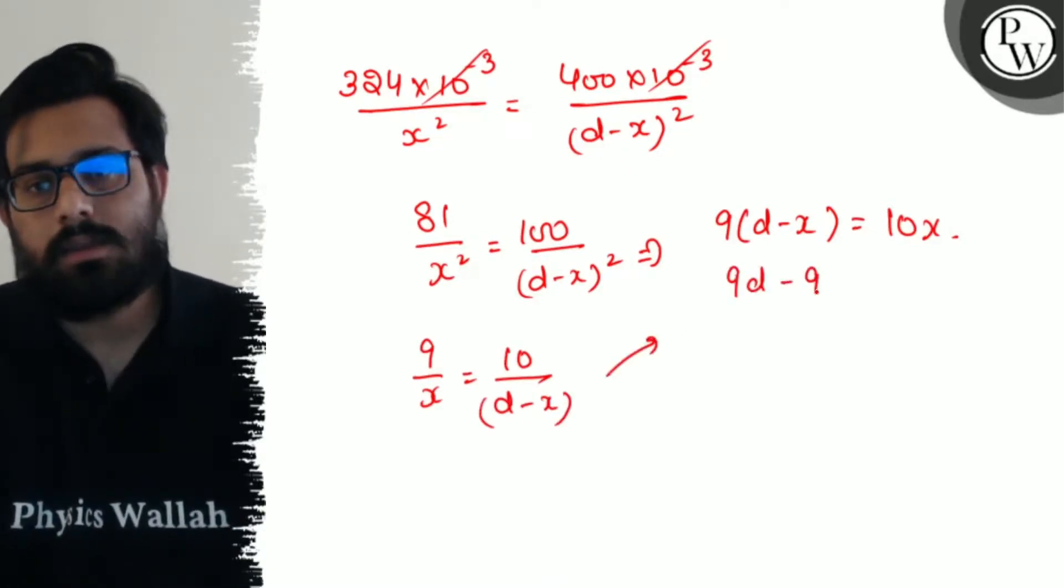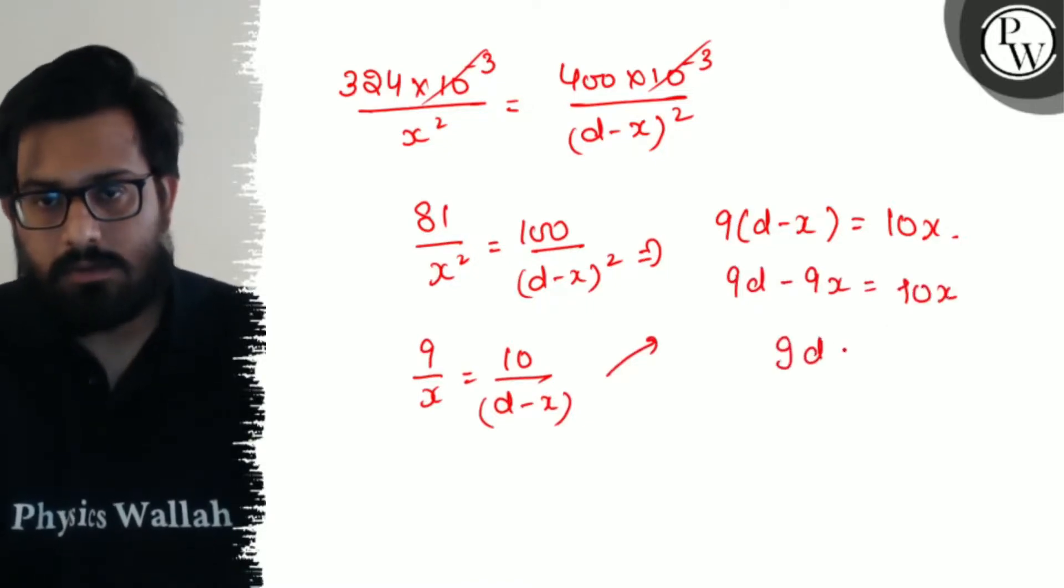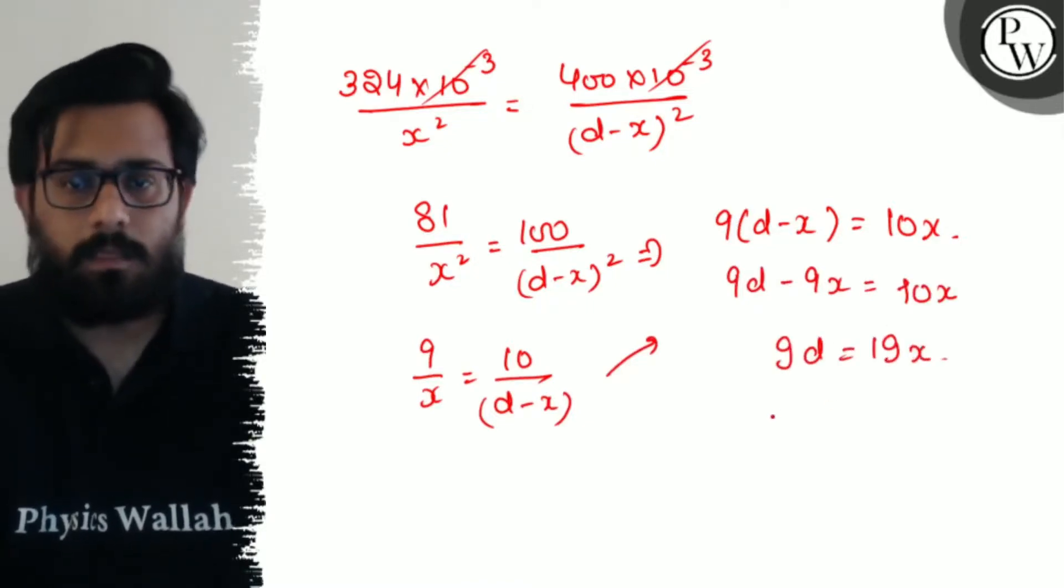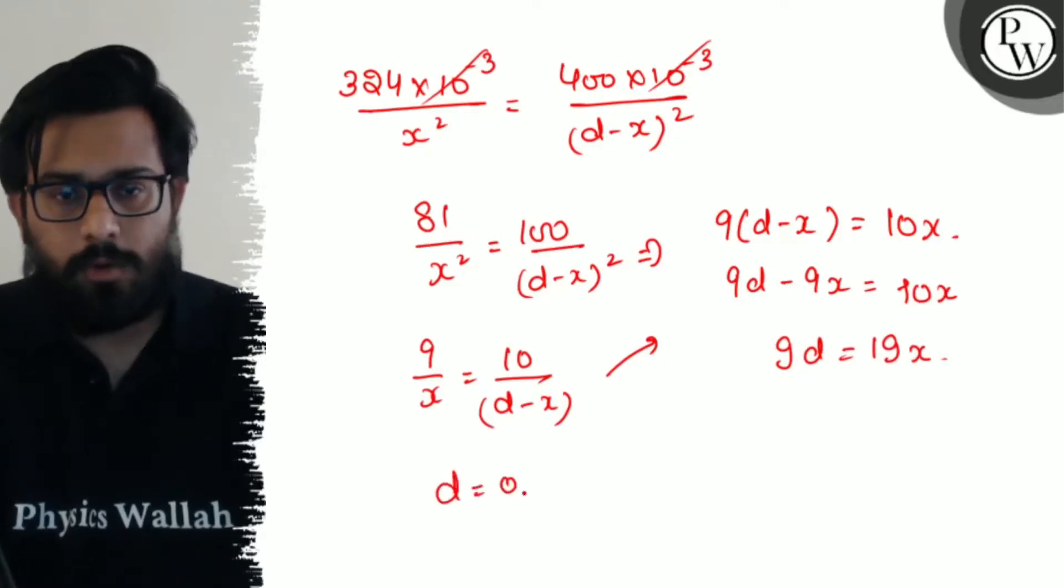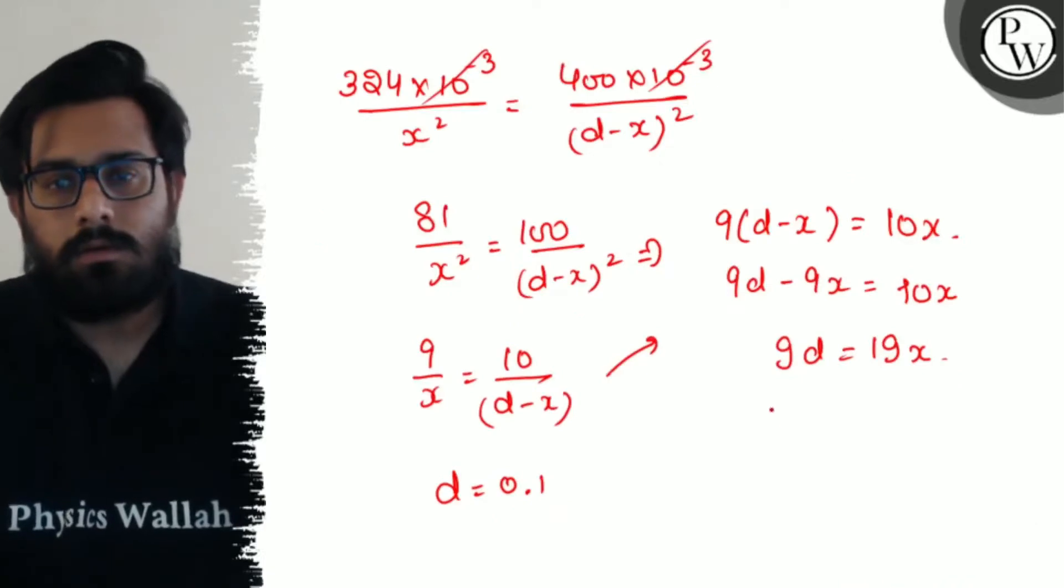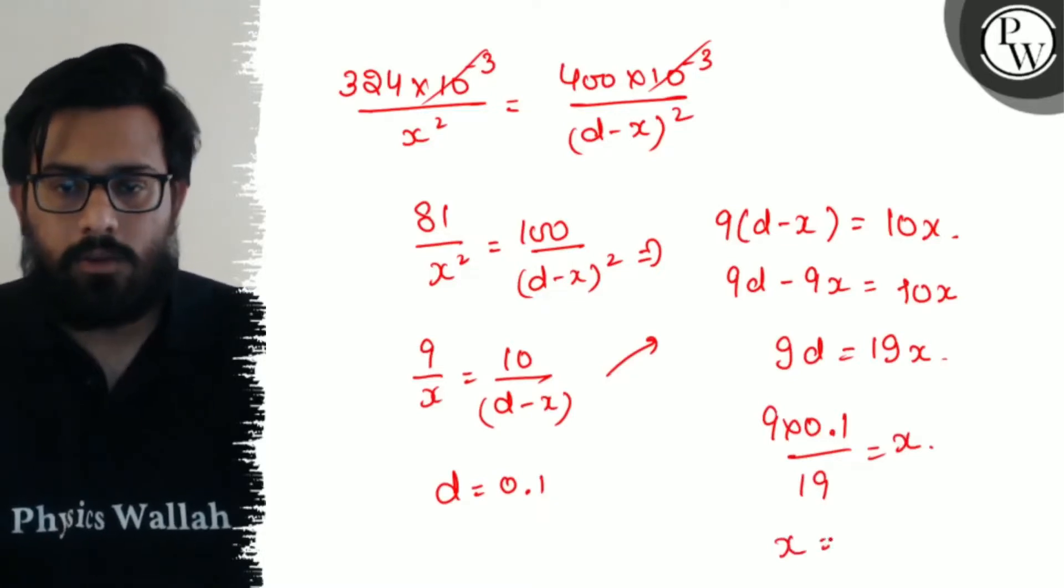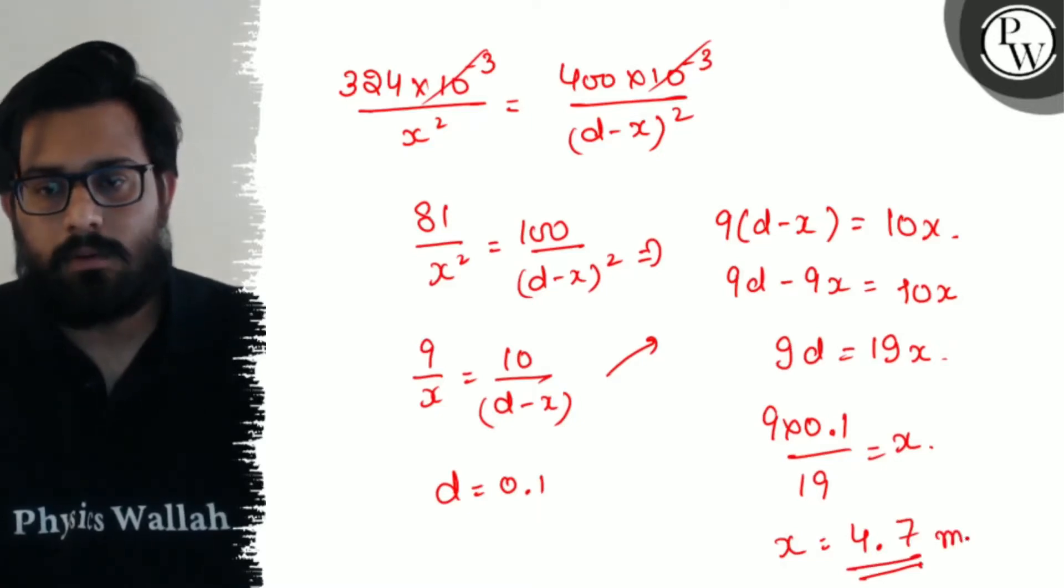So 9 times d minus x equals 10x, which gives 9d equals 19x. Putting d equals 0.1 meter, we get 9 into 0.1 upon 19. Solving it you get a value of 4.73 meter.